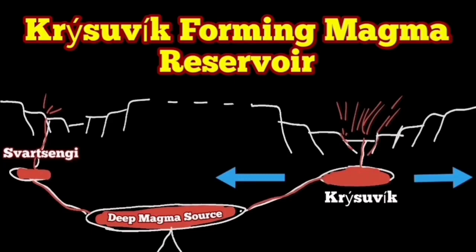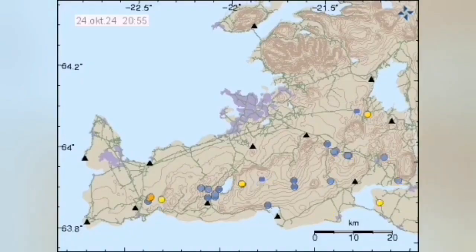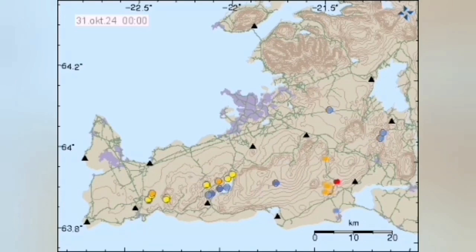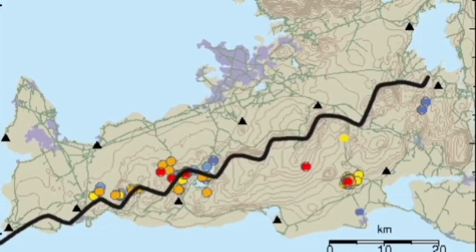Since the end of the last eruption of the Svartsengi volcanic system in August, we are seeing lots of earthquakes in the area of the Reykjanes Peninsula of Iceland. Many of them are concentrated around this lake which we call Kleifarvatn, and that is forming along a series of transform and extension faults that divide the boundary between Eurasia and North America.